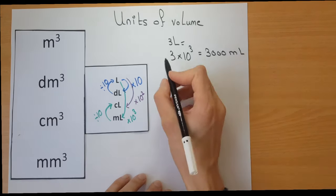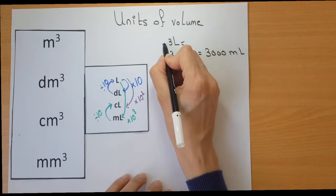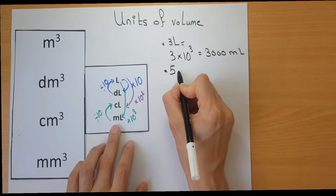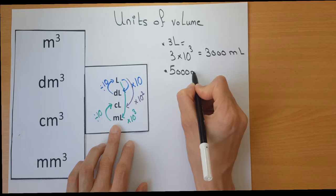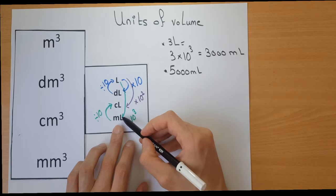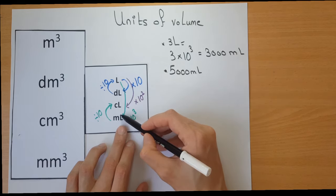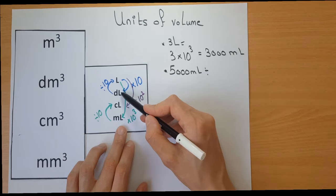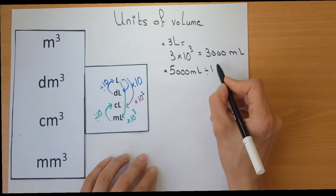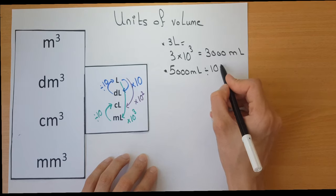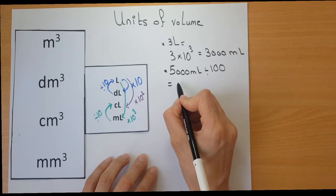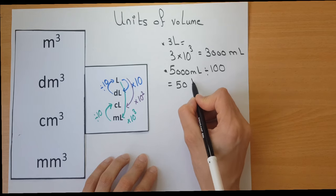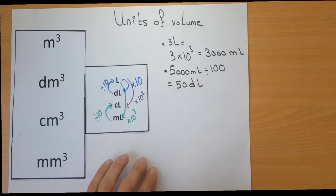Let's take another example. Let's say I have 5,000 millilitres and I want to express them in decilitres. Since I'm going up, I divide. By how many steps? Two steps, so I divide by 100. So we have 50 decilitres.